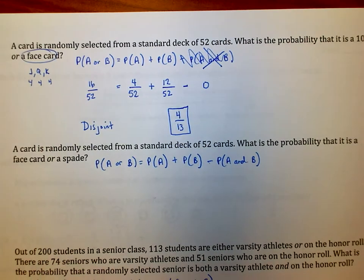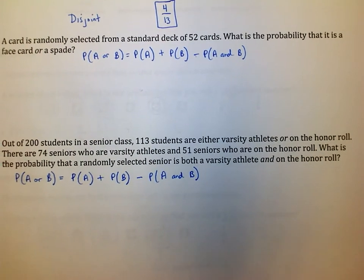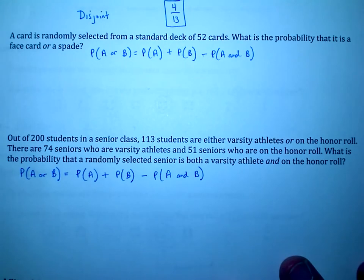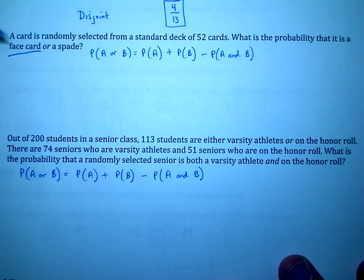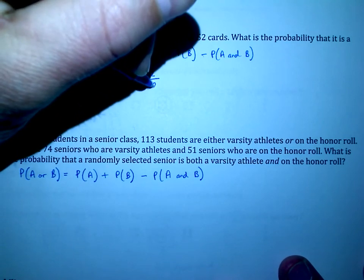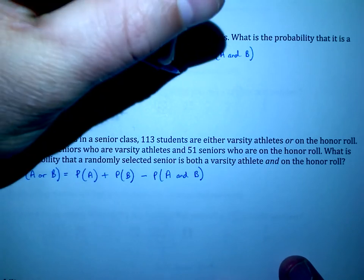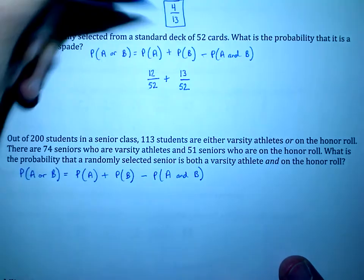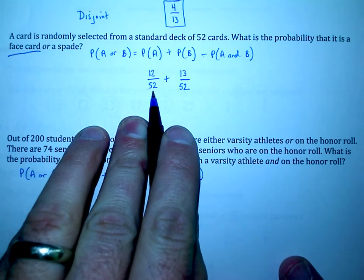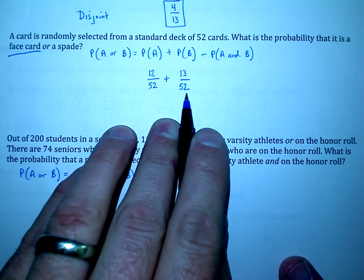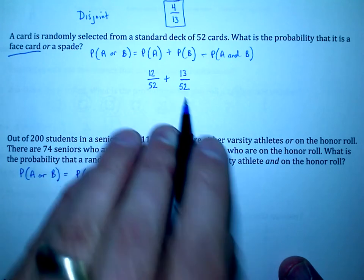Now let's take a look at this problem. A card is randomly selected from a deck of 52 cards. What's the probability that it's a face card or a spade? This one's going to be a little bit different because it is possible to have a face card that is a spade, and so we are going to have something to subtract there at the end. What are the odds that I get a face card? That's 12 out of the 52 cards: jacks, queens, and kings, four apiece. Plus, how many cards are spades? I've got 13 spades in each deck of the 52.